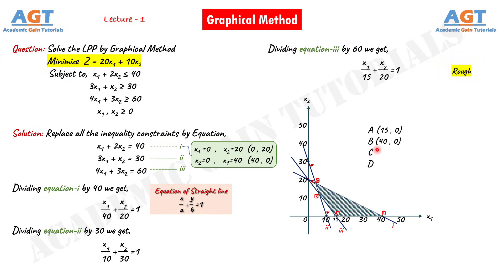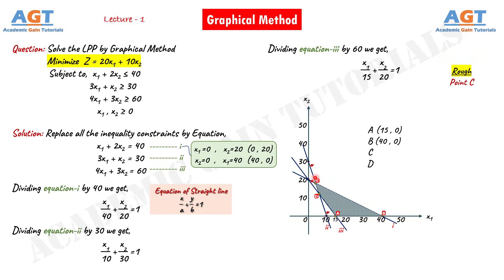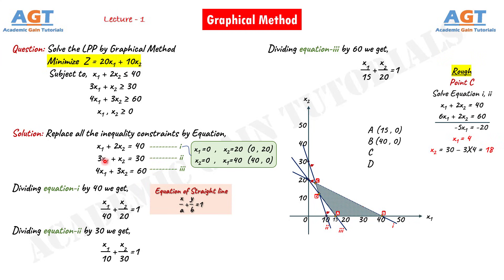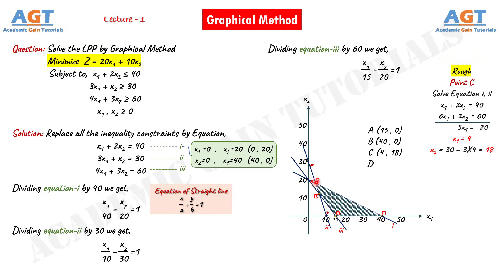For point C, we can see that it is at the intersection of line 1 and line 2. So if we solve equation 1 and equation 2, the values of x1 and x2 we get are the coordinates of point C. Subtracting equation 2 from equation 1, we get minus 5x1 equals minus 20, so x1 equals 4. Putting x1 equals 4 into either equation, we get x2 equals 18. Thus, point C is (4, 18).